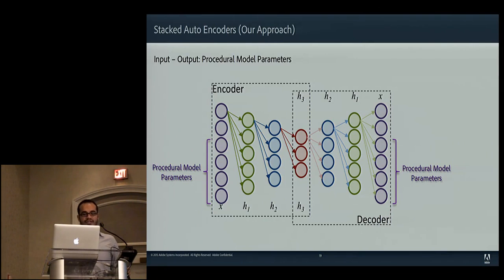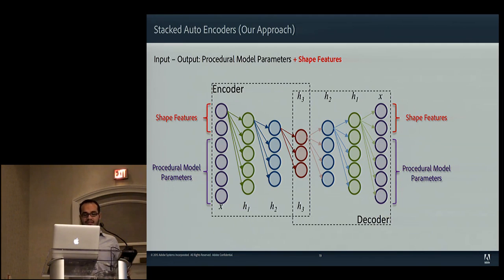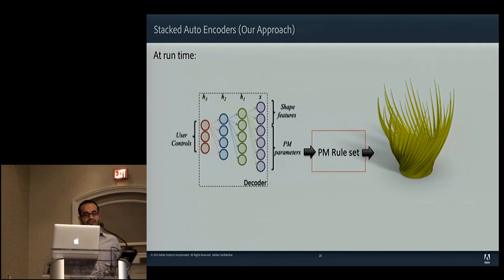Hence, we introduce additional parameters into the input-output pairs when training the network. We design these additional features to force the network to organize the lower dimensional space in a particular way. In our case, we focus on shape similarity, which can be effectively measured by shape features such as shape context, inner distance, or the light field descriptor — you can find the details of these particular features in our paper. Similar to the baseline approach, we use the decoder part of the trained network as user control parameters in our interface to navigate the design space.